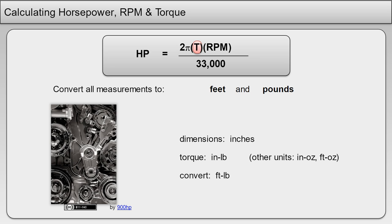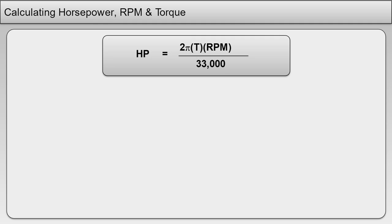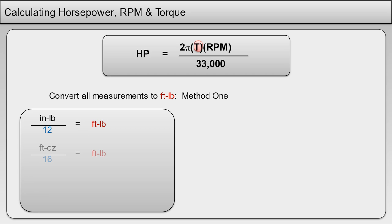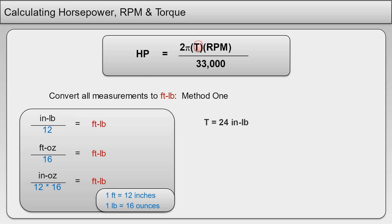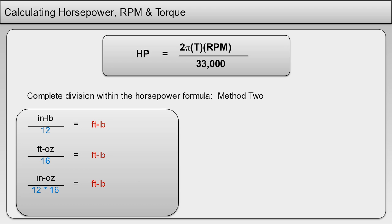Being able to convert these units to the standard foot-pounds is essential when calculating horsepower. There are two ways to convert non-standard torque units to foot-pounds. The first method is to convert all torque units to foot-pounds and then insert that number into the horsepower formula. This table shows how to convert torque given in different units to foot-pounds. For instance, if torque equals 24 inch-pounds, you would divide 24 inch-pounds by 12, which equals 2 foot-pounds. We would then use that number in the formula for T. The second method is to perform the division within the horsepower formula.